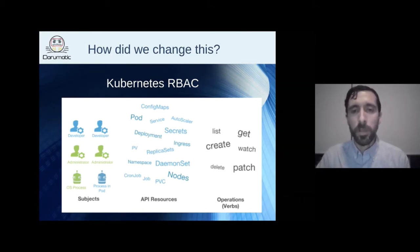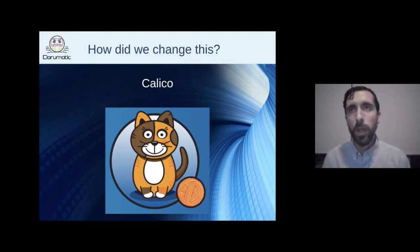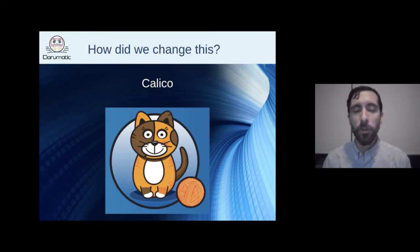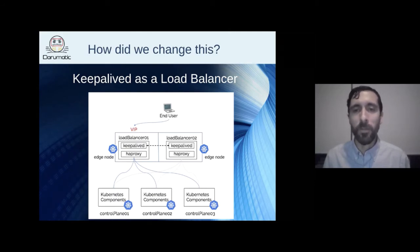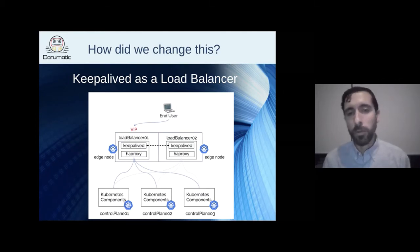We use Calico for networking — we started with Flannel, but Calico gave us the ability to apply network policies, which is important from a security perspective. It had some issues in early versions but has been very stable over the last couple of years. For high availability on OpenStack — unlike AWS or GKE where load balancers are easy — we had to use Keepalived, which you can run inside or outside the cluster.